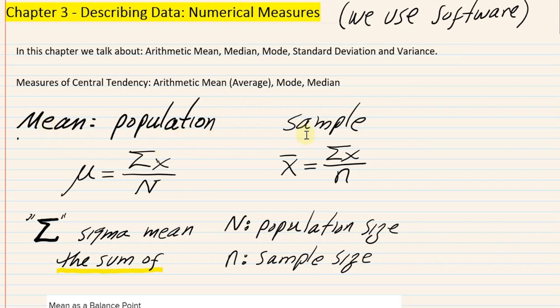We have two of these measures — one for the population, one for the sample. In statistics, there are two formulas for every parameter or statistic. One is for the population — how you would do it if you had all the scores. The other is for the sample, the partial scores. The key difference is in the denominator: capital N is the population size, little n is the sample size. But how we compute them makes no difference.